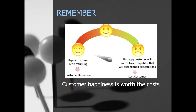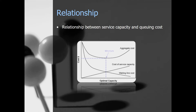Sometimes it costs more to decrease queue times by having more people doing customer service, but in the end it benefits you by keeping customers happy. The relationship between service capacity and queuing costs can be expressed graphically. Initially, the cost of waiting in line is at a maximum when the organization is at minimal service capacity. As service capacity increases, there is a reduction in customers in line and in wait times. The optimal total cost is found at the intersection between the service capacity and waiting line curves.